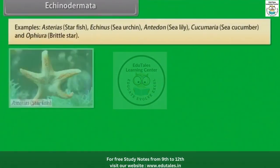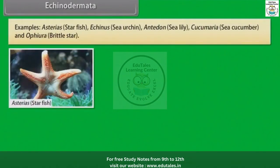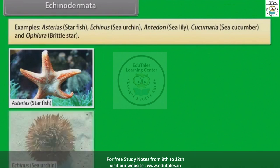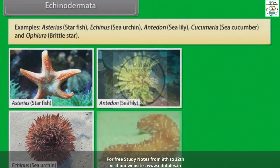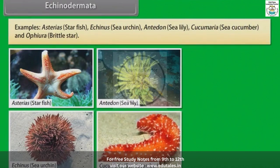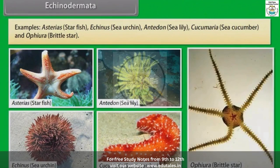Examples: Asterias, that is starfish; Echinus, that is sea urchin; Antedon, that is sea lily; Cucumaria, that is sea cucumber; and Ophiura, that is brittle star.